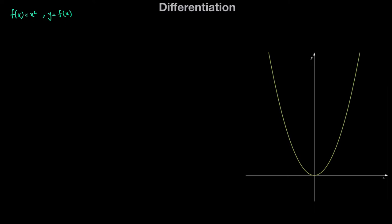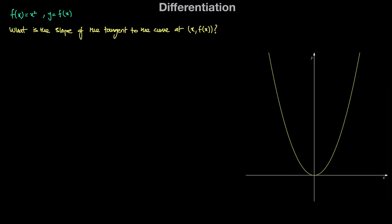The question I want to answer here is: what is the slope of the tangent to the curve at the point (x, f(x))? So what we're doing here is we're taking a point on the curve that has the x coordinate x and y coordinate y equal to f(x) — a given point on this curve — and we want to know what is the slope of the tangent to the curve at this point.